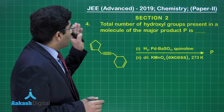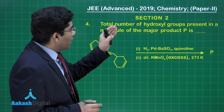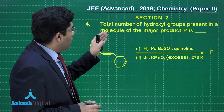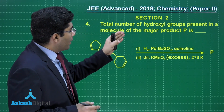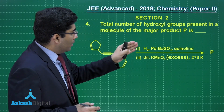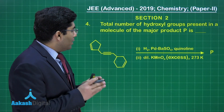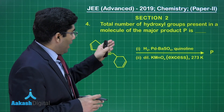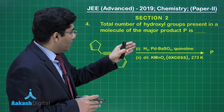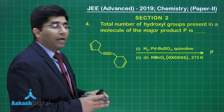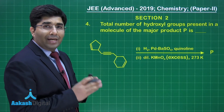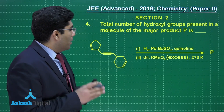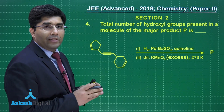In this question, he is asking the total number of hydroxyl groups present in the molecule of the major product P. The compound is given to us and the first reagent is Lindlar's catalyst and the second one is Bayer's reagent.